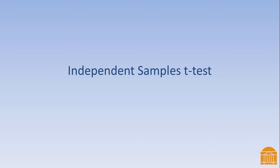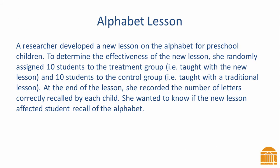In this video, you will learn about the independent samples t-test and the corresponding effect size and confidence interval. We will follow an example throughout the video. A researcher developed a new lesson on the alphabet for preschool children. To determine the effectiveness of the new lesson, she randomly assigned 10 students to the treatment group and 10 students to the control group. At the end of the lesson, she recorded the number of letters correctly recalled by each child, wanting to know if the new lesson affected student recall of the alphabet.